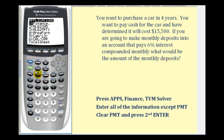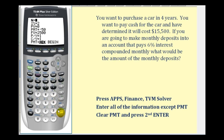We're going to press the Apps key, then Enter for the financial menu, and then Enter again for the TVM Solver. Now we'll enter all the information except for PMT, which stands for payment. Capital N represents the total number of payments. We're making monthly deposits for four years, so N would be twelve times four. The interest rate is six percent. The starting value or present value is zero. Let's skip the payments for right now.